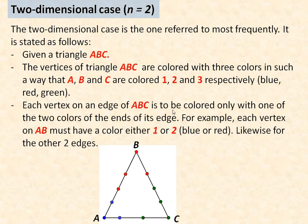The two-dimensional case is the one referred to most frequently, and it goes like this. I've got two dimensions. I've labeled the triangle with three different vertices: A, B, and C. These could also be labeled 1, 2, and 3.